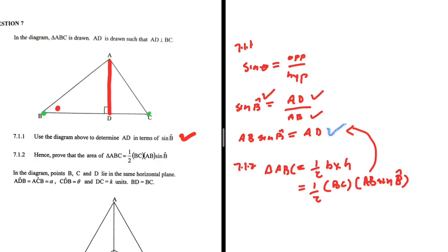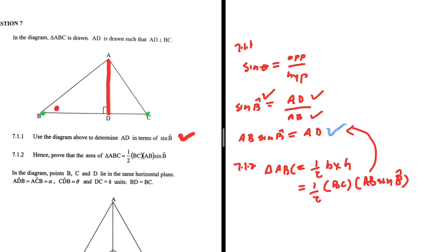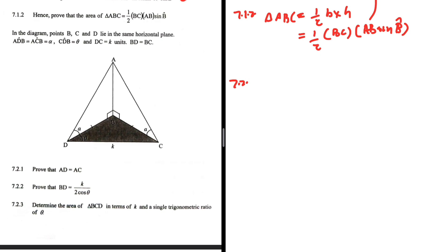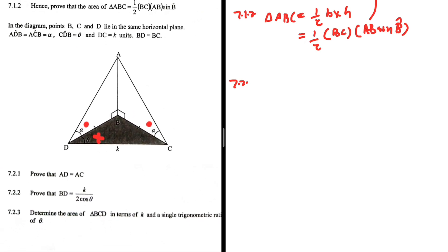For 7.2, in the diagram, points B, C, and D lie on the same horizontal plane. Angle ADB equals angle ACB, both equal to alpha. Angle CDB equals theta, and side DC equals k. Also, BD equals BC.